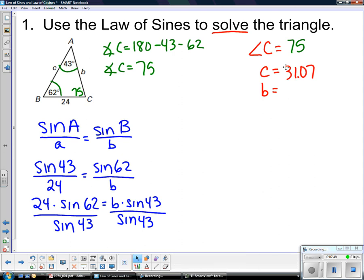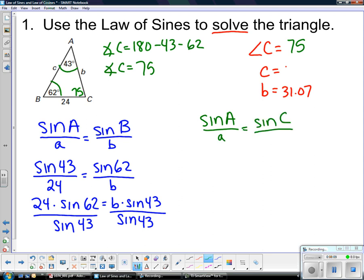So 31.07. Now to find side c. Make sure you label correctly. Side b was 31.07. Now side c. Start with what you were given. So sine of A over side a is equal to the sine of angle C over side c. So I knew the sine of 43 over 24 was equal to the sine of 75 over c.